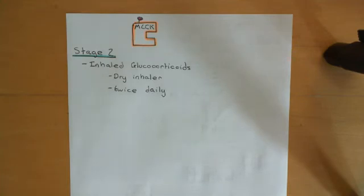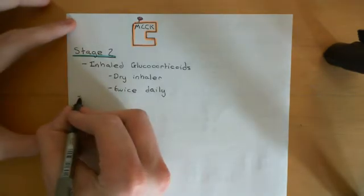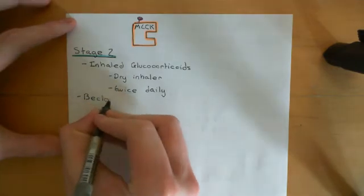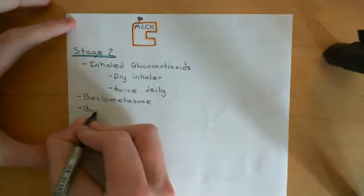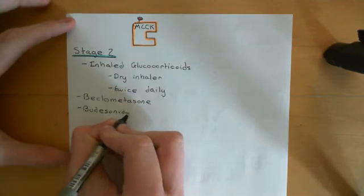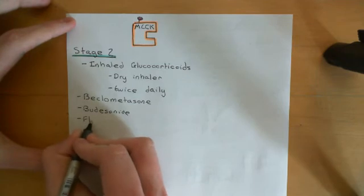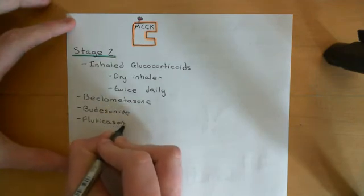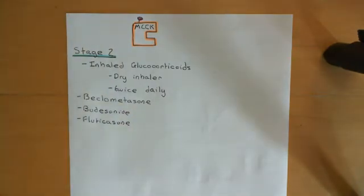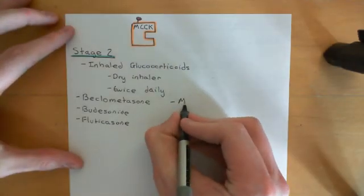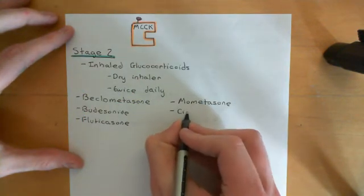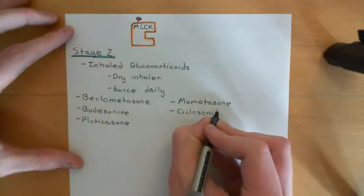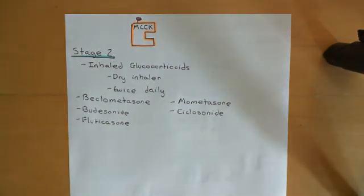Notable examples then of inhaled glucocorticoids are beclometasone. Another example is budesonide. So beclometasone and budesonide. Another example is fluticasone. Mometasone and ciclesonide are my two final examples. So mometasone is another inhaled glucocorticoid, and ciclesonide. So those are five examples of drugs which are given by dry powder inhaler, and they're given routinely, generally twice daily for asthma.